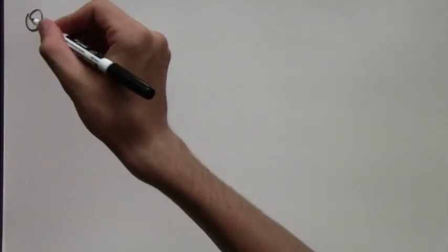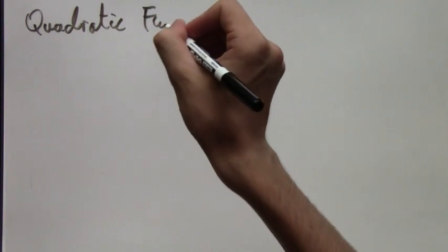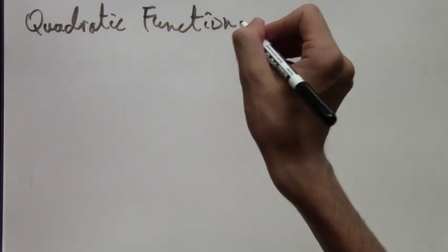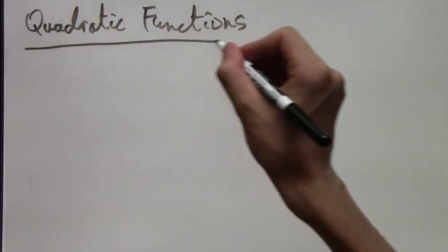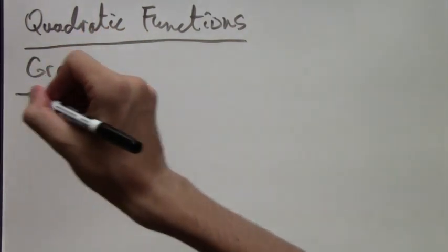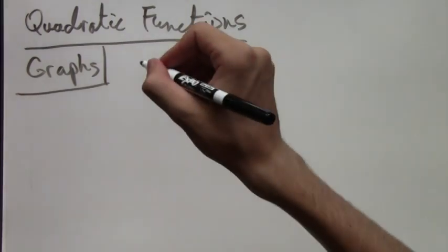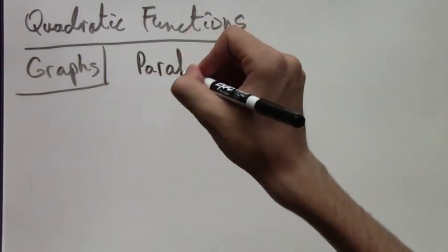In this video lesson, we'll learn how to graph quadratic functions. As you probably have learned already, when we graphed linear functions, we got straight lines. What do we call the graph of a quadratic function? The word for it is parabola.